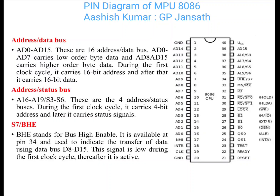S7 and BHE: BHE stands for Bus High Enable. The BHE pin is available at pin number 34 and is used to indicate the transfer of data using data bus D8 to D15. The signal is low during the first clock cycle, and thereafter it is active.